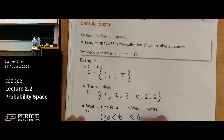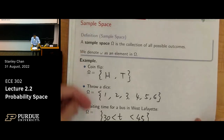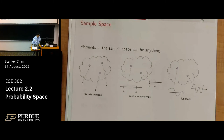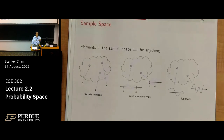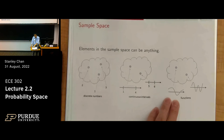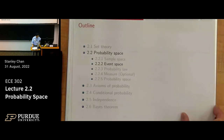With that sample space defined we can ask: what is the probability that the bus will come between 32 and 33 minutes? We can define that event. The sample space can contain discrete numbers like die rolls, continuous intervals like time, or even all possible functions such as sine and cosine functions. Sample space is fairly straightforward.